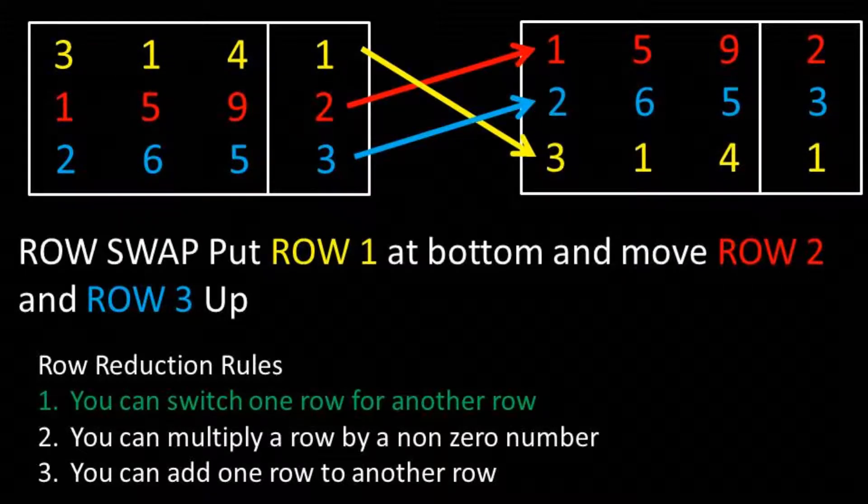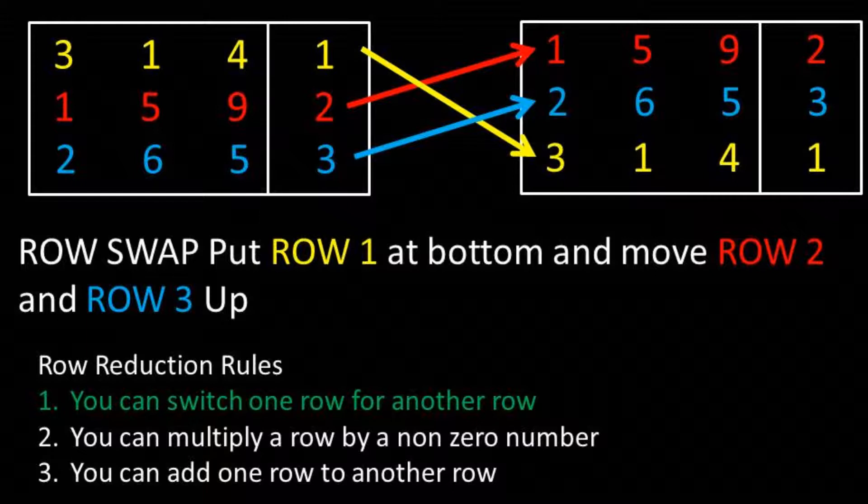Let's begin by working on column 1. So I see a 1 in row 2, so let's move row 1 to the bottom and move row 2 and row 3 up.